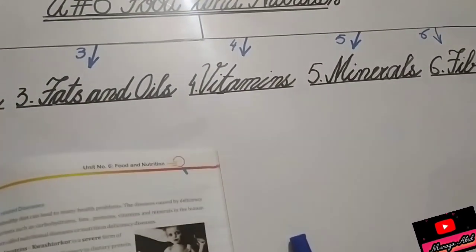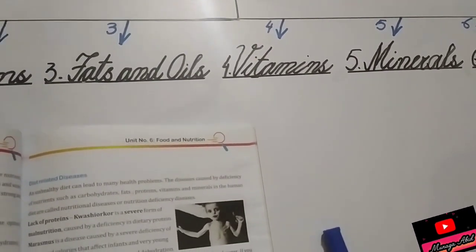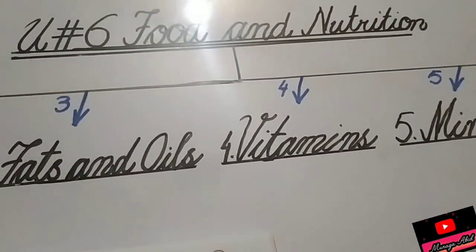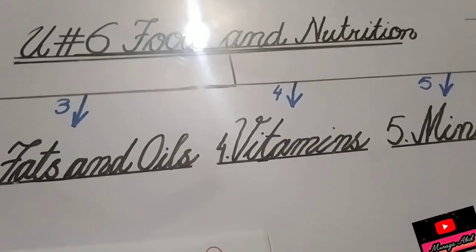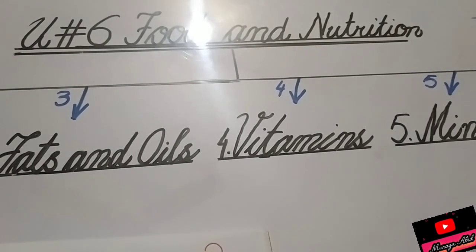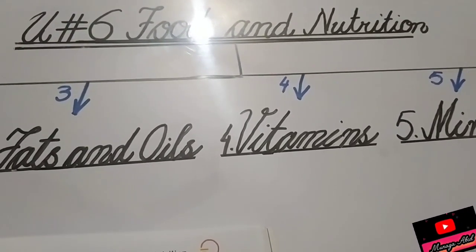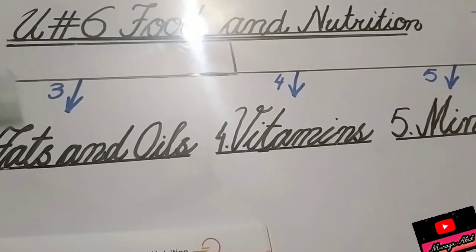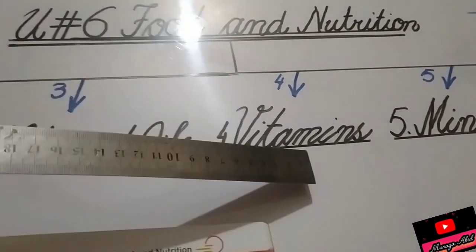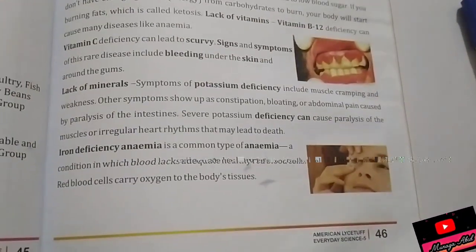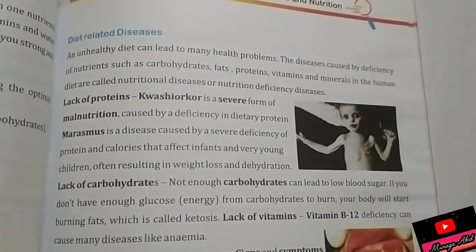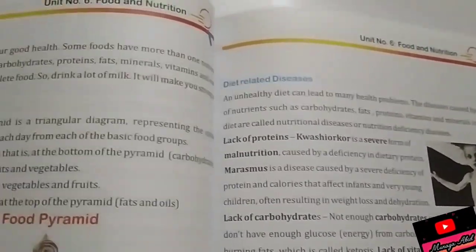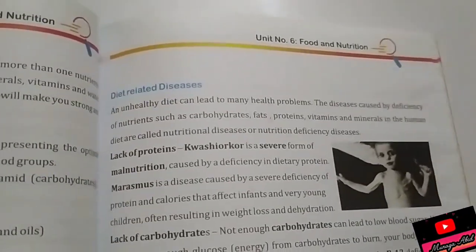Deficiency means when you are not getting that type of nutrient and your body becomes short of that thing. Deficiency means shortage. Many things which depend on that vitamin are affected by that. We are going to study at page number 46 what are the deficiency diseases — diet-related diseases. As we have studied, there are seven food groups.